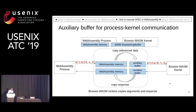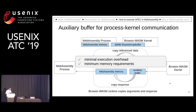So instead we have another approach: a small 64 MB shared array buffer which is an auxiliary buffer, and whatever the system call references, we copy only that part. If that system call requires more than 64 MB, we split it into several messages. This results in minimal execution overhead and minimum memory requirements.